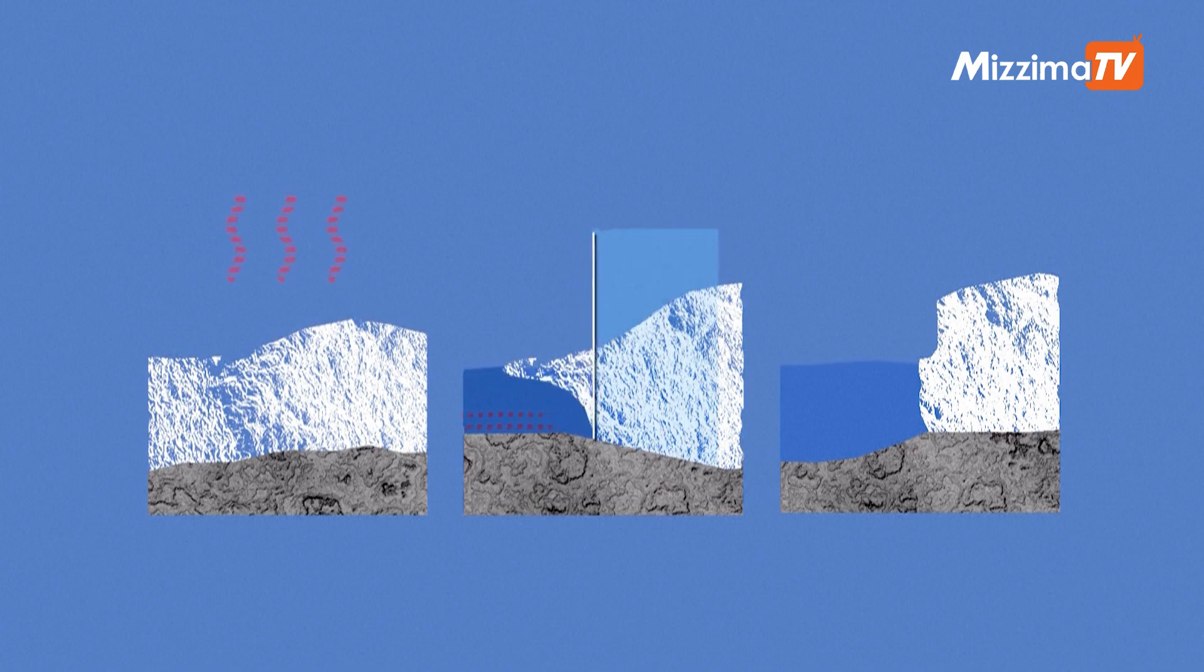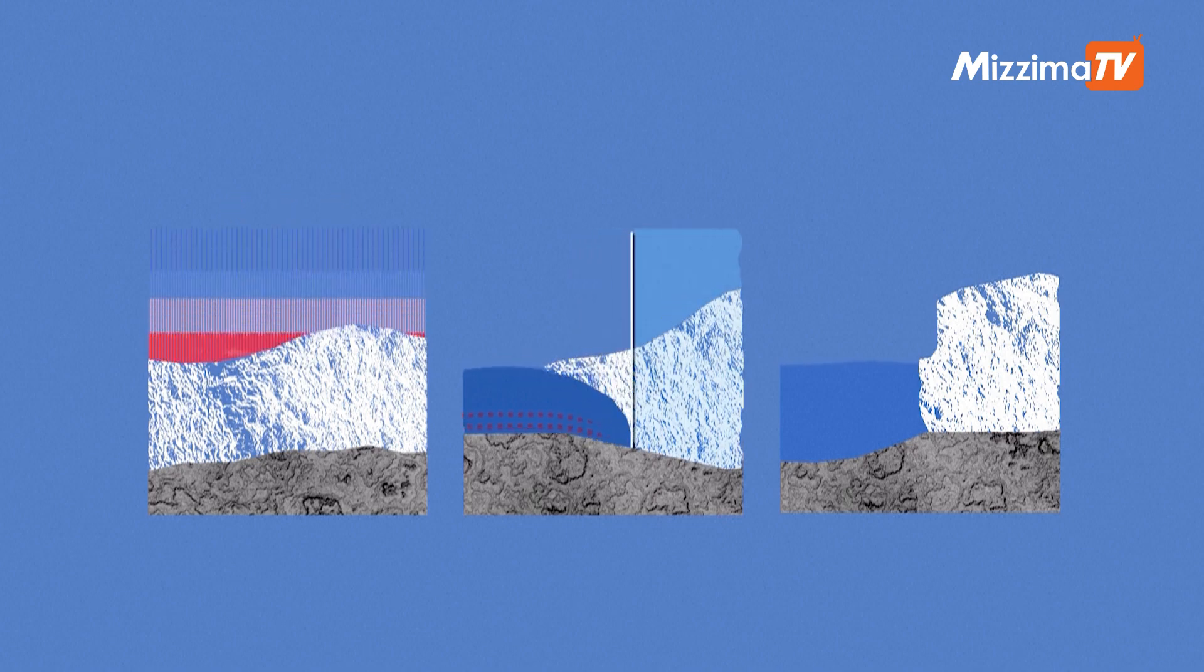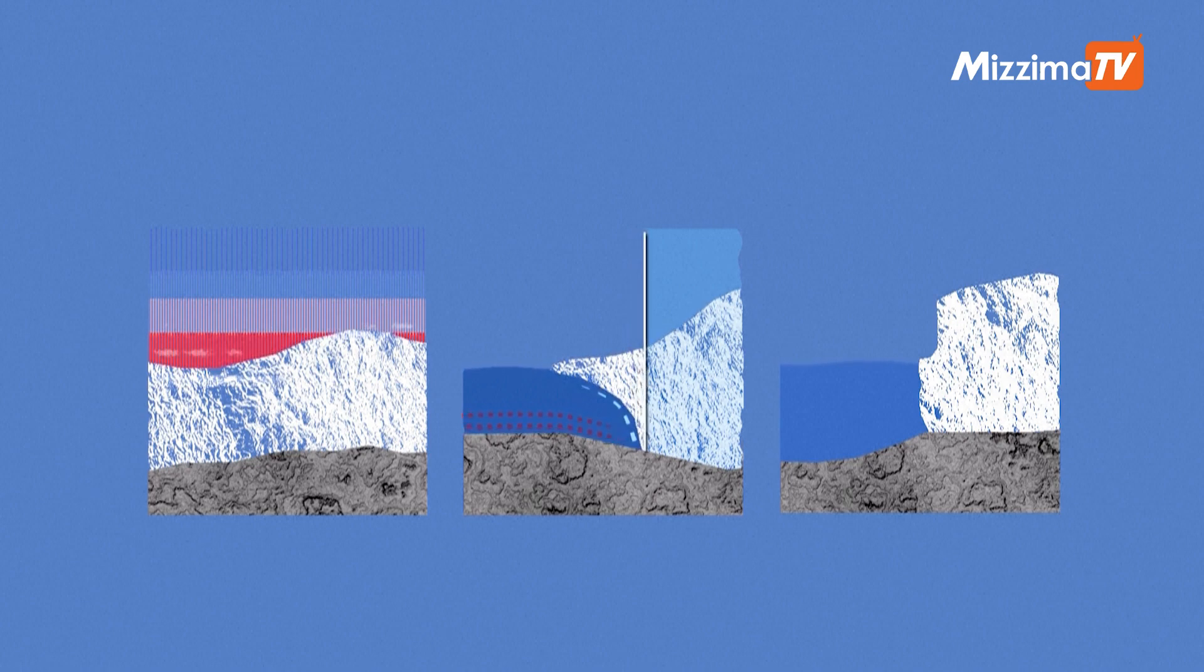A recent study highlights that the amount of ice melting or breaking off into the ocean from ice sheets has quadrupled since the 1990s.